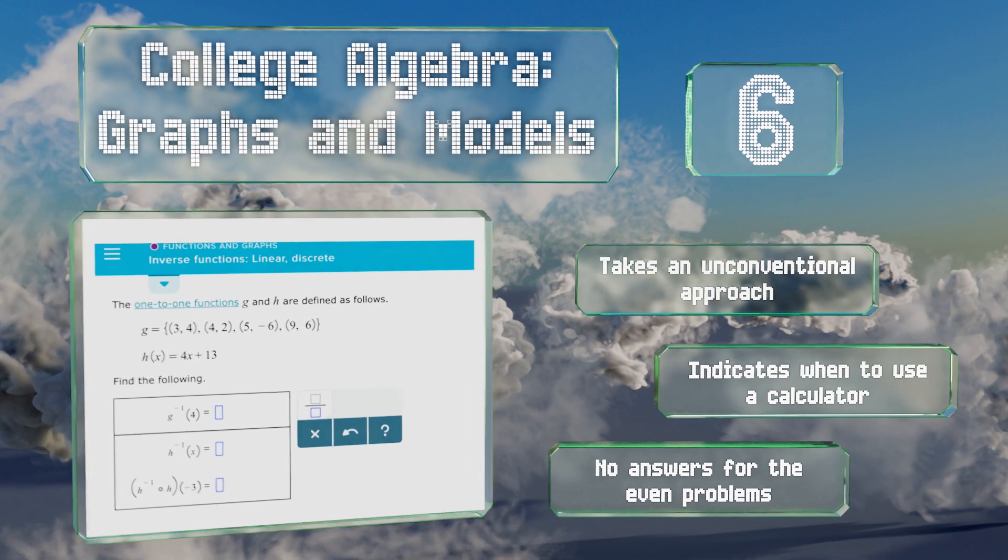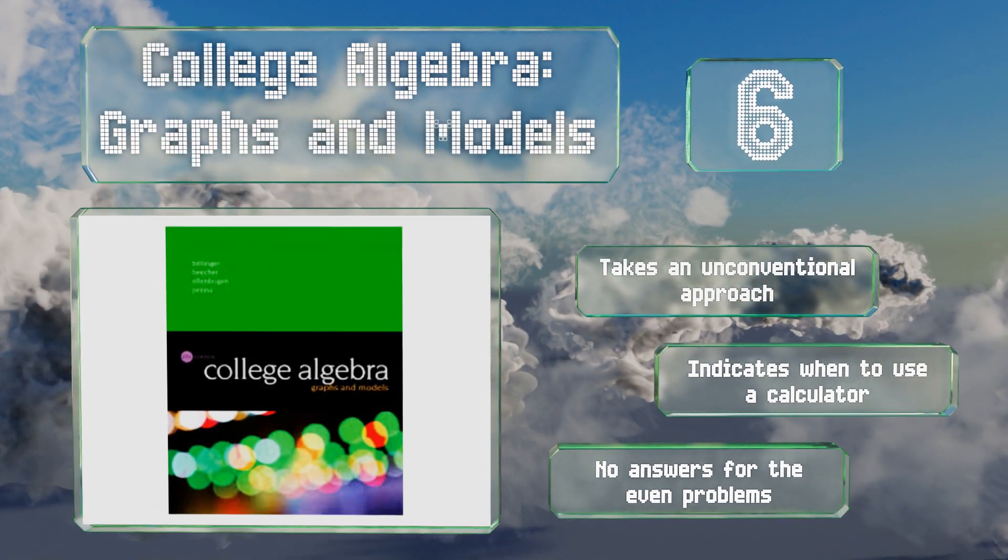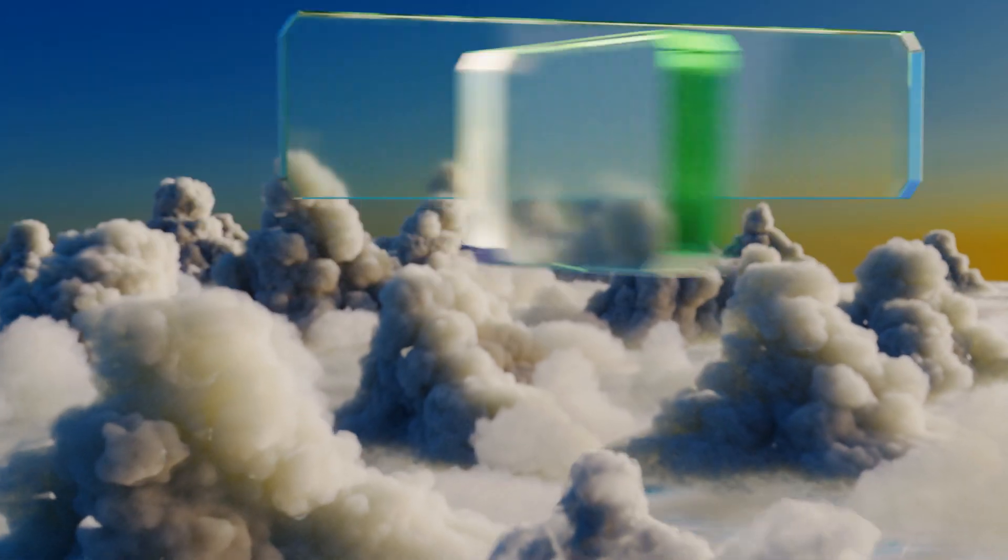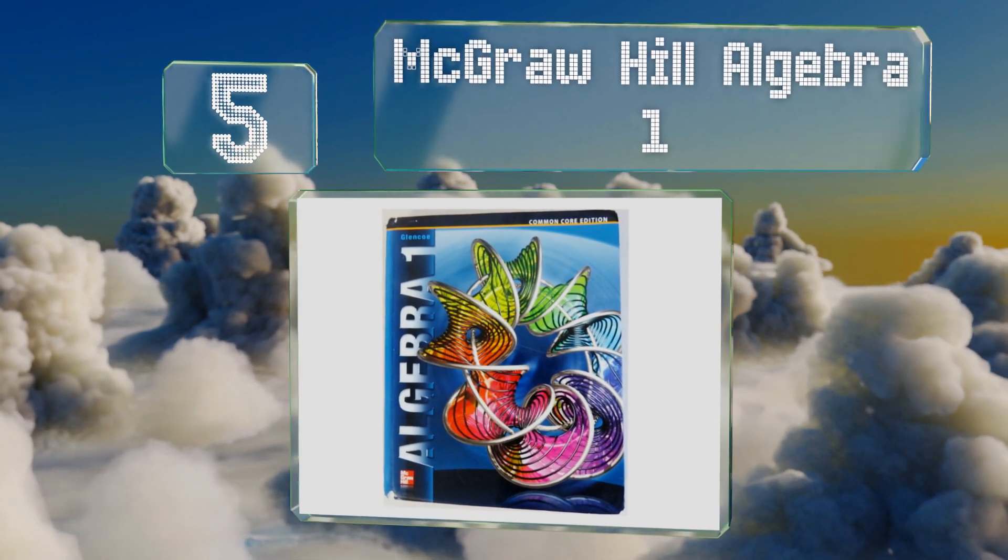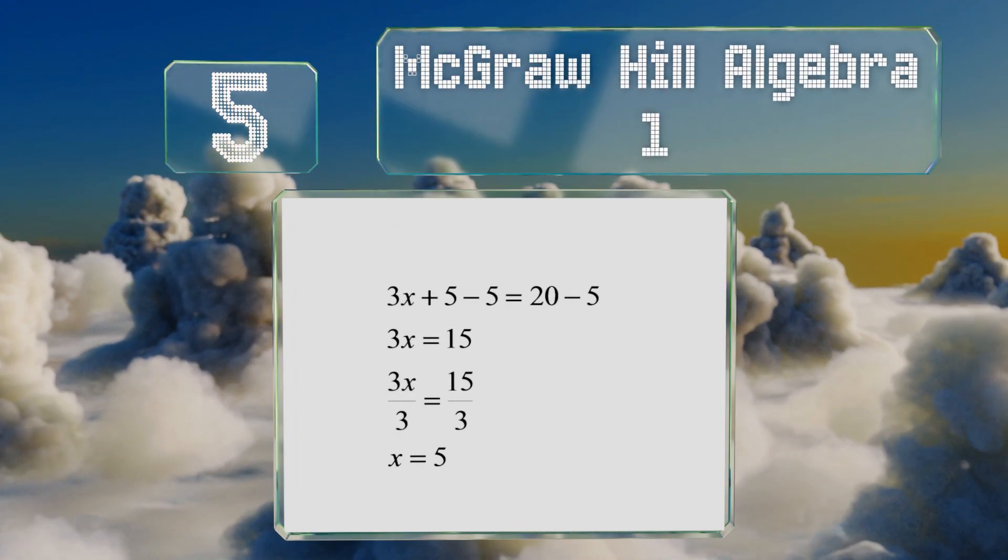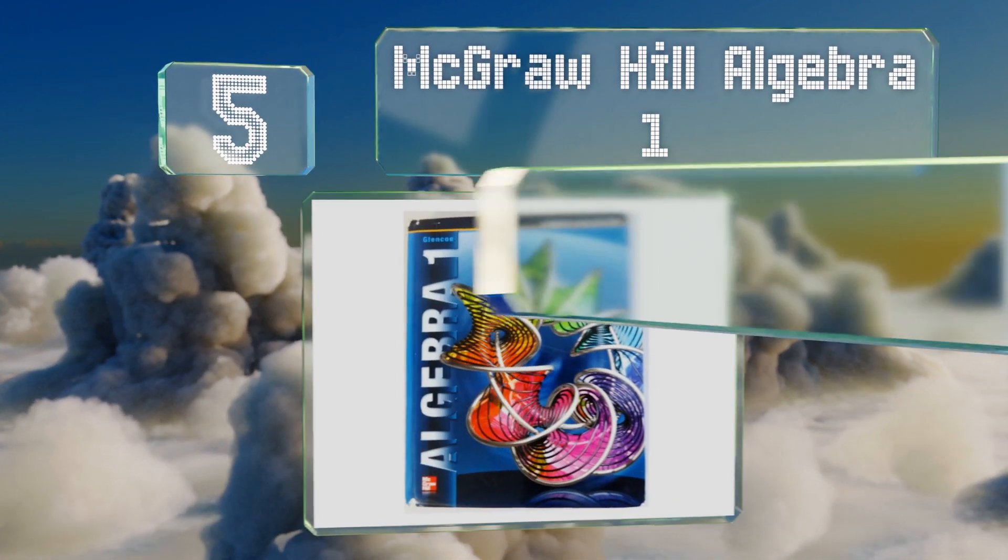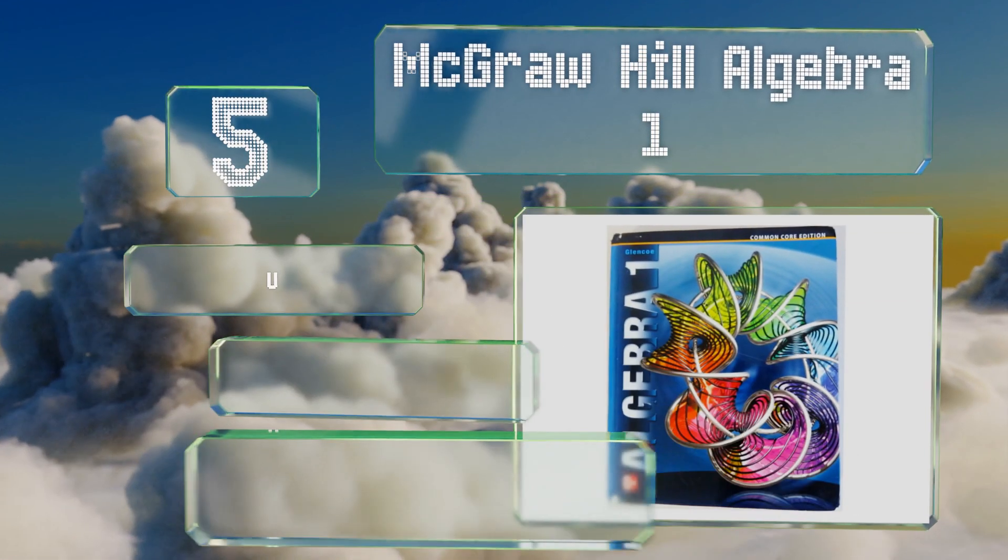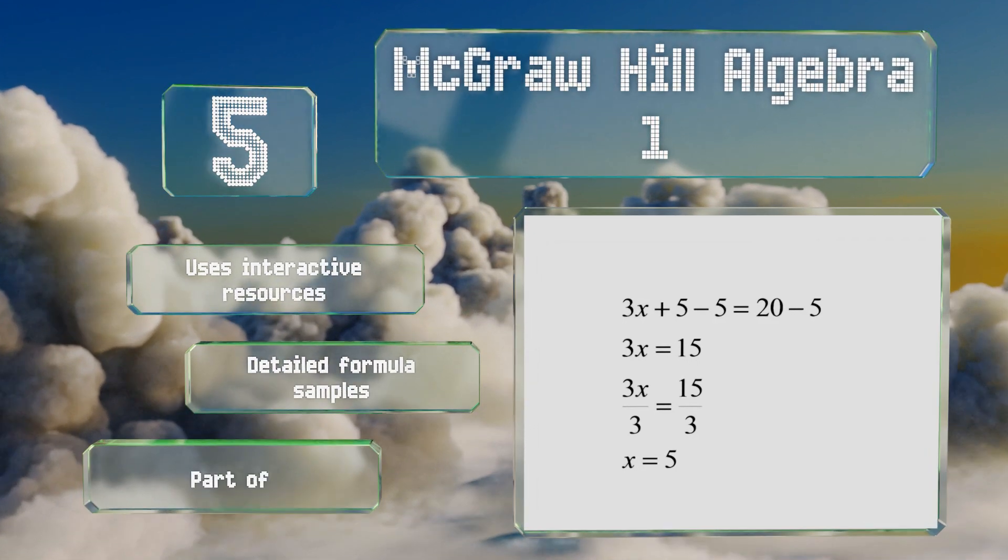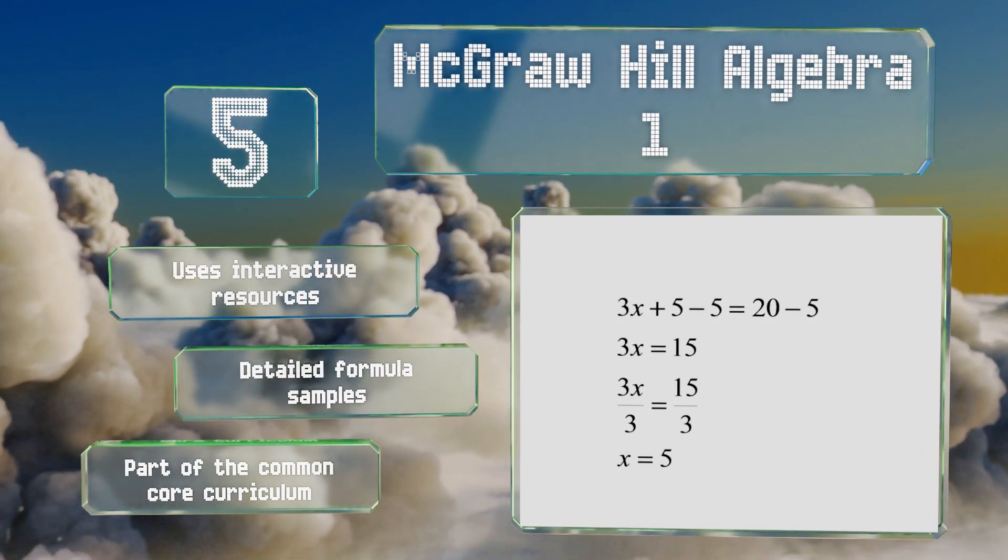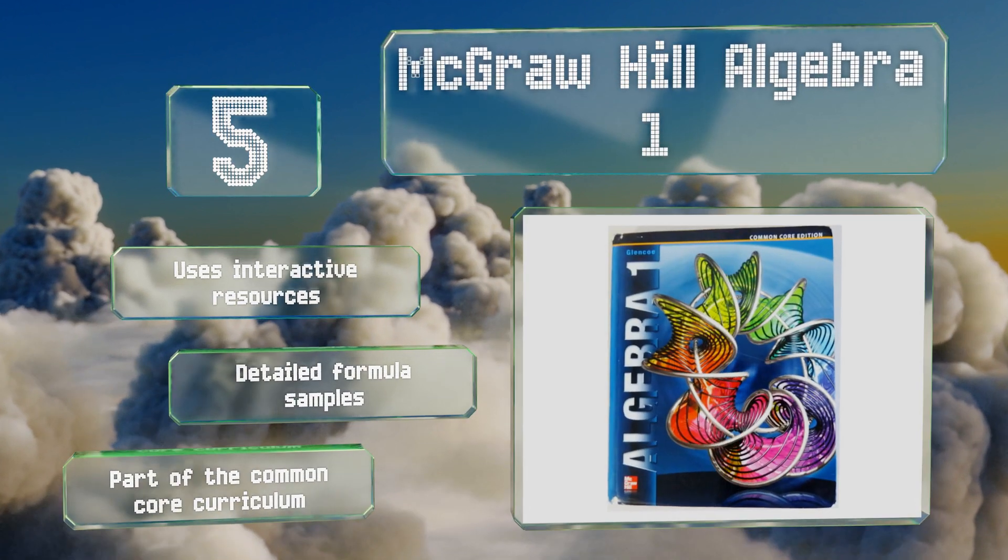Halfway up our list at number five, McGraw-Hill Algebra 1 provides comprehensive coverage of the subject, introduces concepts and skills, and offers opportunities to practice and reinforce what has already been learned. It's great for homeschooling, tutoring, and the classroom. It uses interactive resources and includes detailed formula samples. It's part of the Common Core curriculum.